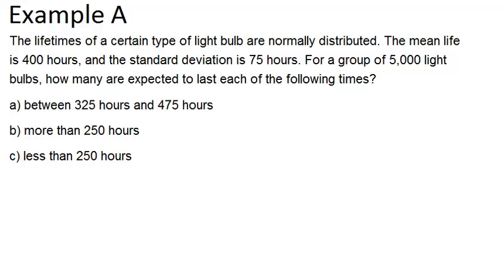In this video, we will look at a few examples to practice working with the empirical rule for normal distributions. Example A: the lifetimes of a certain type of light bulb are normally distributed. The mean life is 400 hours and the standard deviation is 75 hours. For a group of 5,000 light bulbs, how many are expected to last each of the following times?